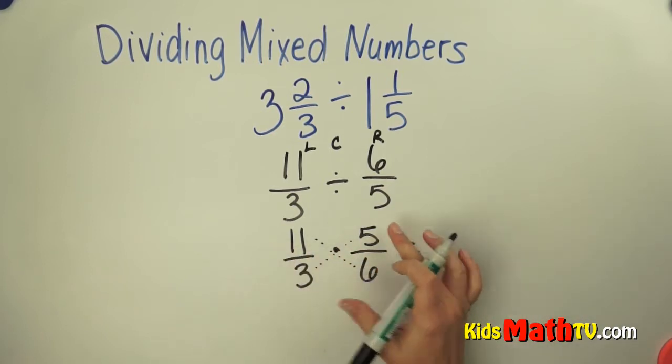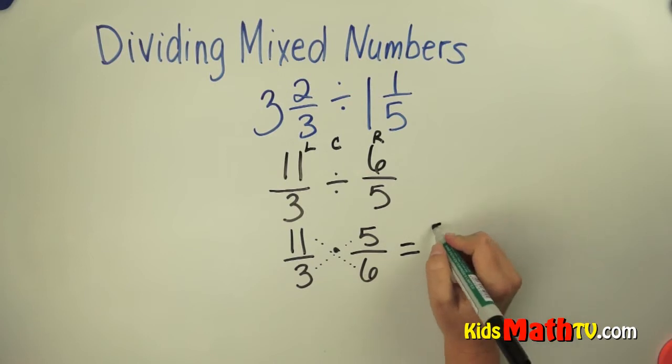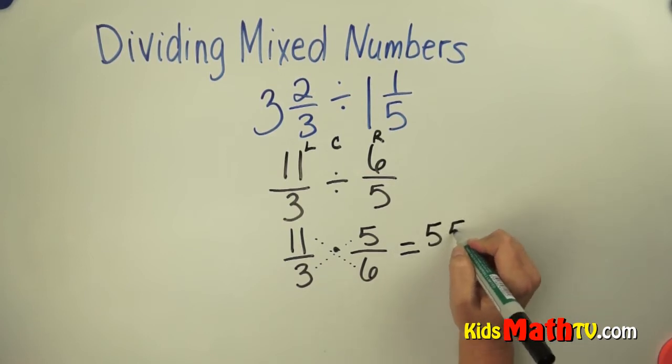So now I simply multiply the numerators. 11 times 5 is 55. 3 times 6 is 18.